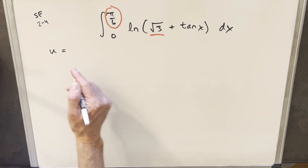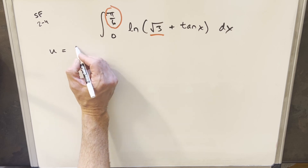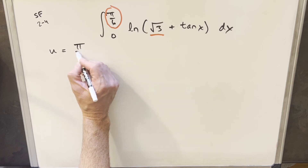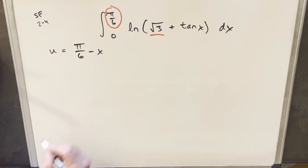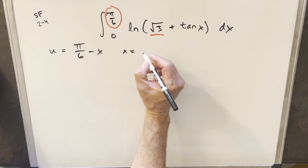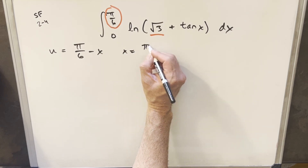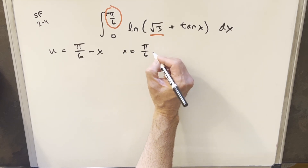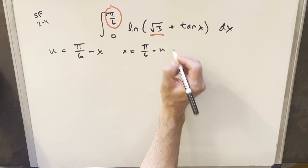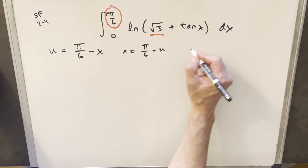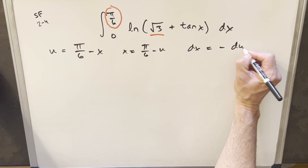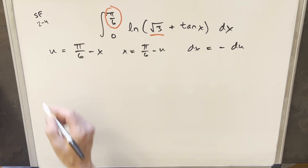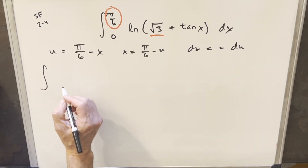I'm going to try a substitution and use these bounds — I'm just going to add the two bounds together. For my u-substitution, I'm going to substitute u = pi over six minus x. Rearranging, x equals pi over six minus u, and the derivative dx is going to be just minus du.